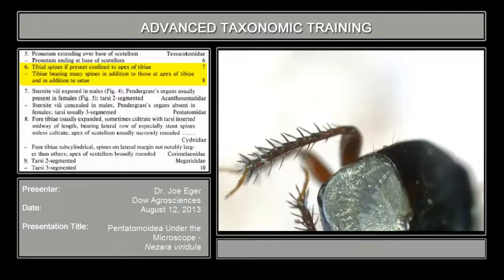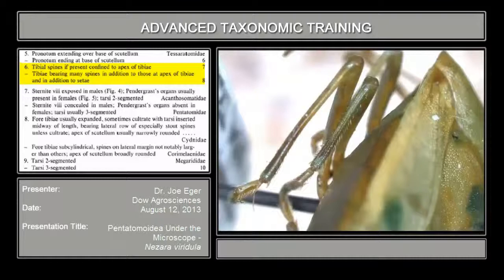Couplet number six: your first choice is tibial spines, if present, confined to the apex of the tibia, or tibia bearing many spines in addition to those at the apex. These are the kinds of stout, distinctive spines they're looking for on one alternative — very different from what our bug has, which are very fine setae. Here are the tibia of our bug, which are quite different from what we just saw.